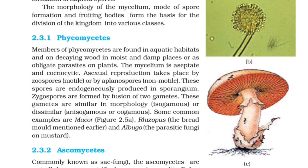2.3.1 Phycomycetes. Members of Phycomycetes are found in aquatic habitats, on decaying wood in moist and damp places, or as obligate parasites on plants. The mycelium is aseptate and coenocytic. Asexual reproduction takes place by zoospores (motile) or by aplanospores (non-motile), which are endogenously produced in a sporangium. Zygospores are formed by fusion of two gametes that are similar in morphology (isogamous), or dissimilar (anisogamous), or by oogamy. Some common examples are Mucor, Rhizopus (the bread mold), and Albugo (the parasitic fungus on mustard).